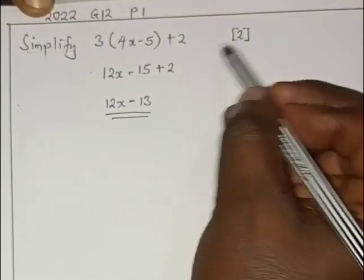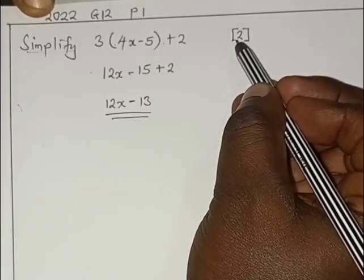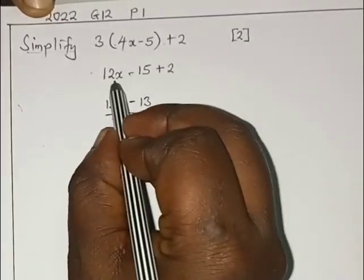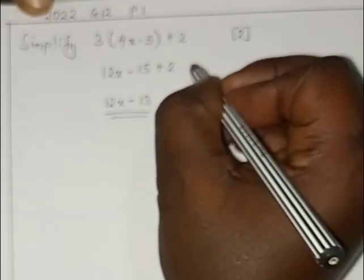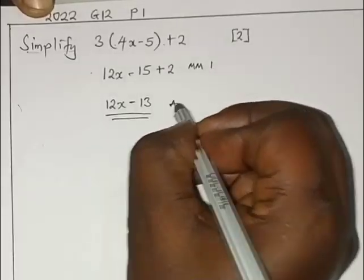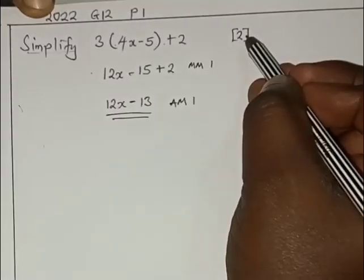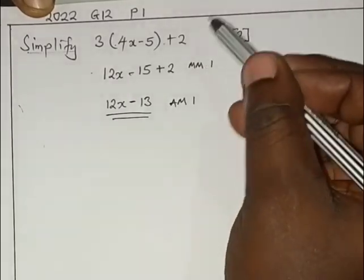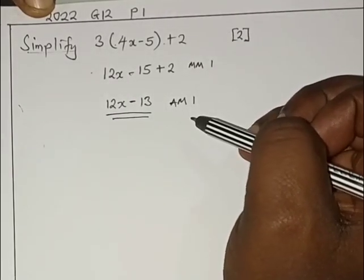So the number of marks, the way they will be allocated here, we can simply say at this point here we will give you what we call method mark one and the answer mark one. You get your full two marks, that's the way the marking is done. Bye bye.